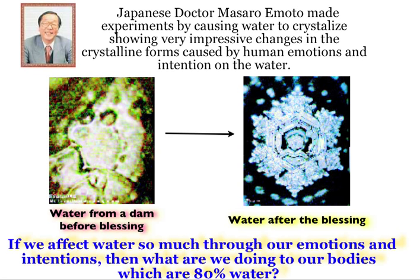Another experiment was done by a Japanese doctor, Masaru Emoto, who did experiments causing water to crystallize and then taking pictures of the crystallized water. He would emit certain emotions, blessings, or ideas to the water to see if the crystalline structure of the water would change. He's produced a book with hundreds of photographs. Here's water from a dam before a blessing — it looks quite disorganized, with no symmetry and it's dark. And then after a blessing, the water became this beautiful image on the right-hand side.